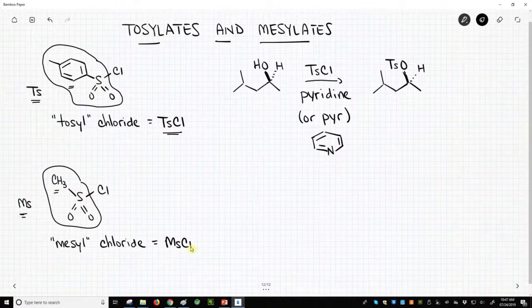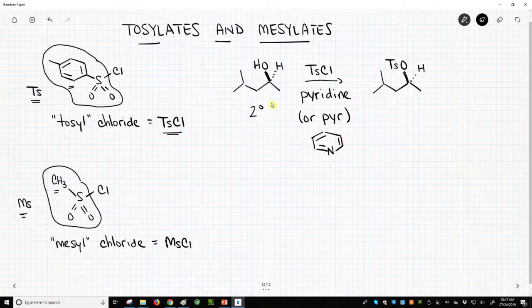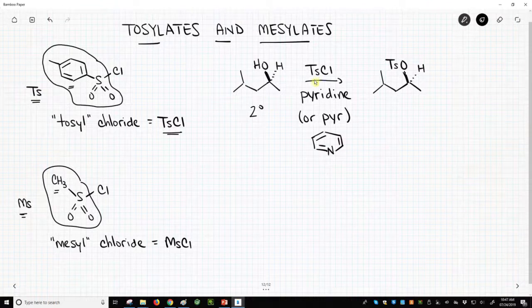So how do we use this reagent? Well, both these reagents react with alcohols in the presence of a fairly weak base. So here is a secondary alcohol. It doesn't have to be a secondary alcohol. It could be primary, it could be tertiary, and in this case, I've reacted this with tosyl chloride.